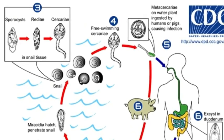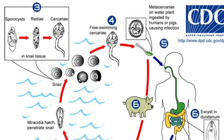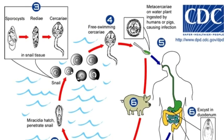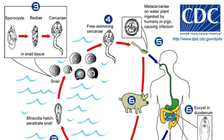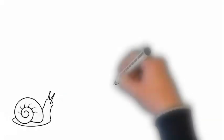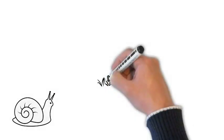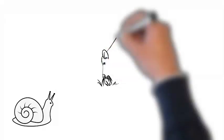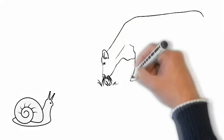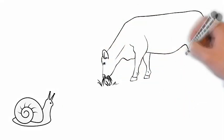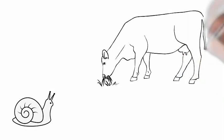Stage 4: Cercaria. Have a tail, use it to exit from snail and swim to a plant. If the snail is feeding on a plant, Cercaria can latch onto plant with sucker mouth and start to encyst, form a cocoon, within minutes. Tail breaks off and swims away to dissolve.